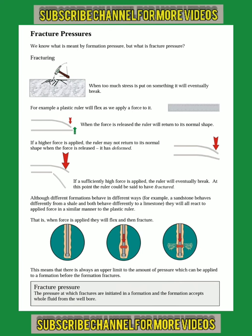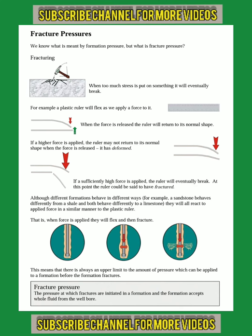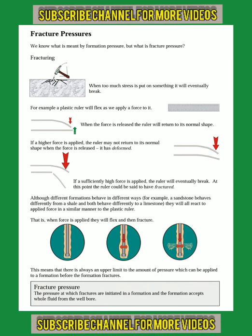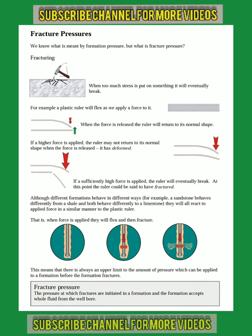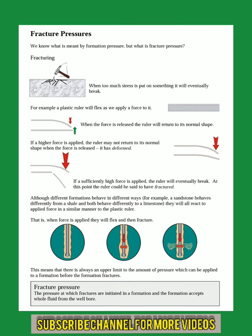Differential sticking. During all drilling operations, the drilling fluid hydrostatic pressure is designed and maintained at a level which exceeds the formation pore pressure by usually 200 psi. In a permeable formation, this pressure differential — overbalance — results in the flow of drilling fluid filtrates from the well to the formation. As the filtrate enters the formation, the solids in the mud are screened out and a filter cake is deposited on the walls of the hole.